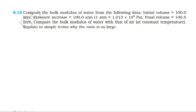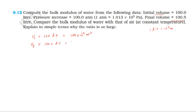Now, let's solve the problem. Initial volume is 100 litres, that is 100 × 10⁻³ metre cube, since 1 litre equals 10⁻³ metre cube. Final volume is 100.5 litres, that is equal to 100.5 × 10⁻³ metre cube.